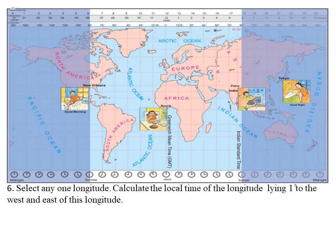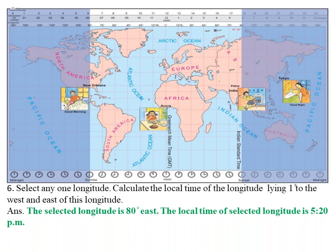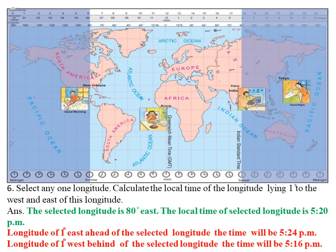Question 6: Select any one longitude and calculate the local time of the longitudes lying 1 degree to the east and west of it. The selected longitude is 80 degree east, with a local time of 5:20 pm. The longitude 1 degree east of the selected longitude will have a time of 5:24 pm, and the longitude 1 degree west will have a time of 5:16 pm.